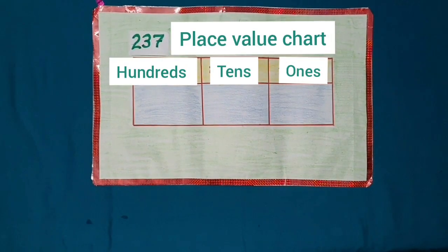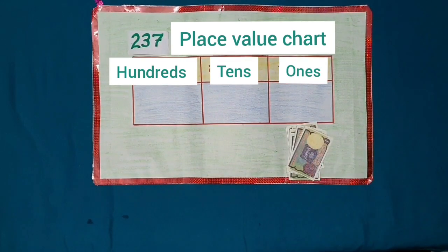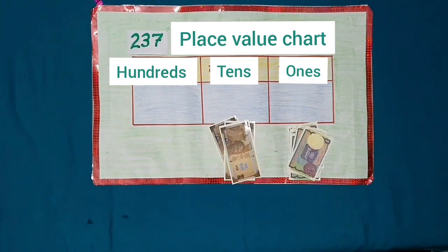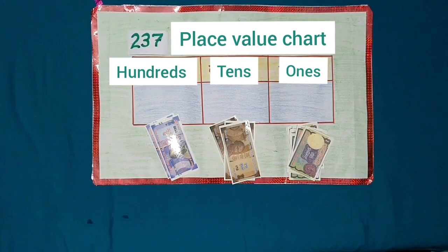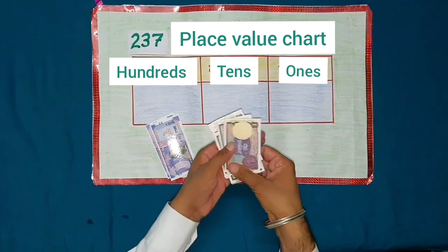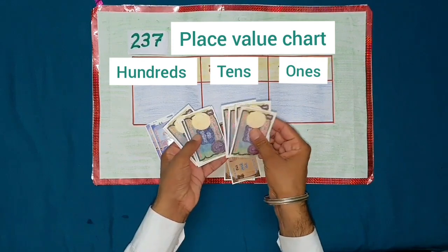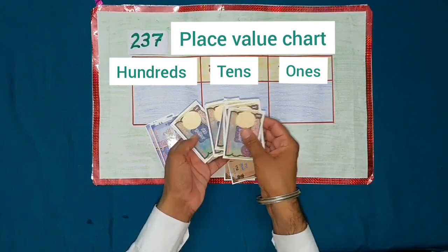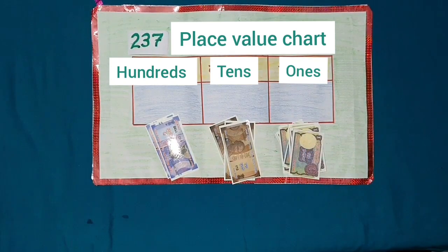Students, it has already been known by you that for the place of 1's, currency notes of Rs.1 are used. For the place of 10's, currency notes of Rs.10 are used, and for the place of 100's, currency notes of Rs.100 are used. Let's count notes of Rs.1: 1, 2, 3, 4, 5, 6, 7. So, the digit for the place of 1's is 7.